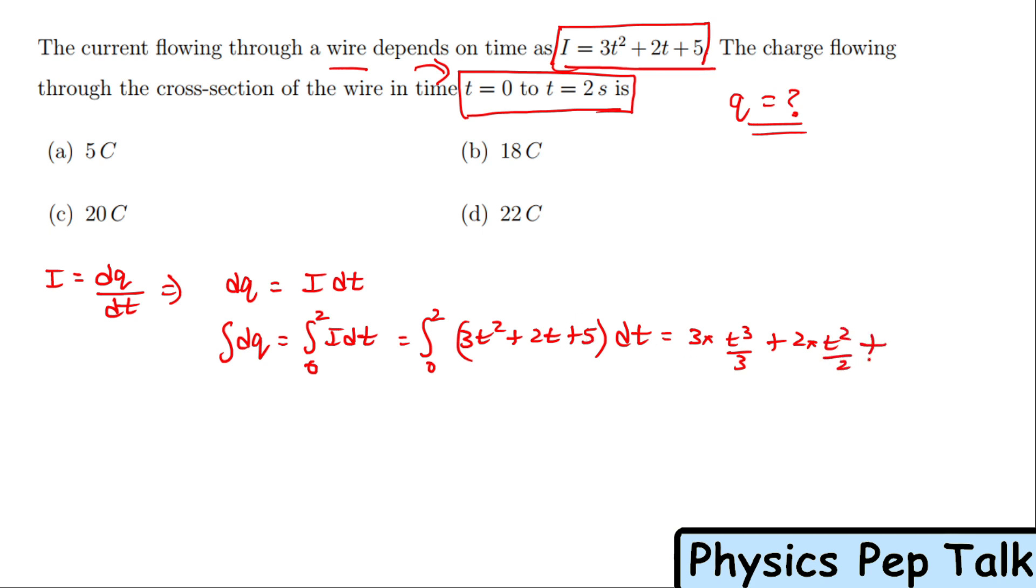Integrating 3t² gives 3 times t³/3, plus 2 times t²/2, plus 5t, within the limits 0 to 2. The 3s cancel, the 2s cancel. For integral of dq we get q. Applying upper limit minus lower limit: 2³ = 8, plus 2² = 4, plus 5 × 2 = 10, minus lower limit which gives 0. This equals 8 + 4 + 10 = 22 coulombs.